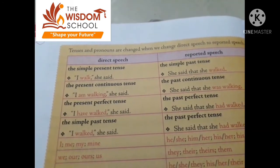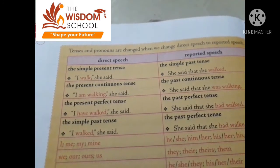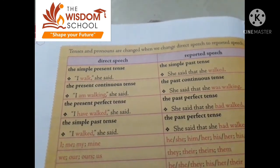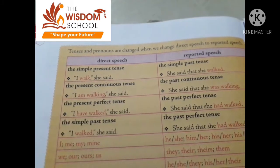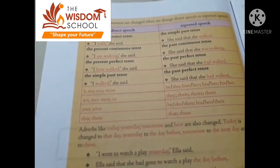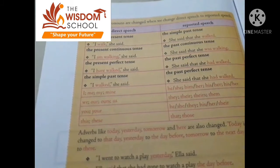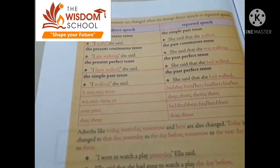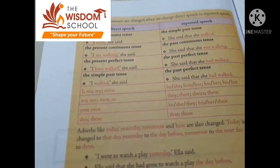The present continuous tense — 'I am walking' — changes to past continuous: 'was walking.' Present perfect changes to past perfect. 'I have walked' changes to 'had walked.'